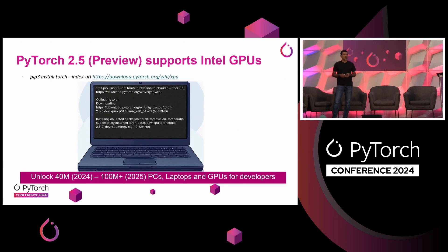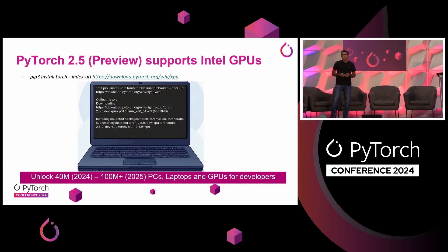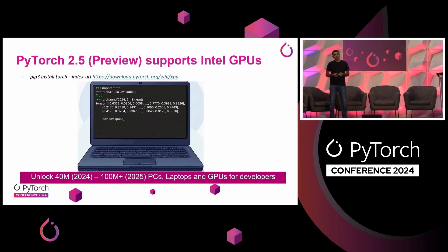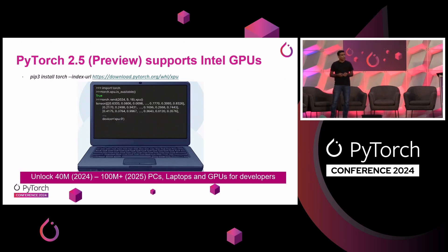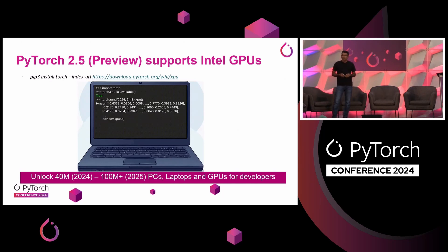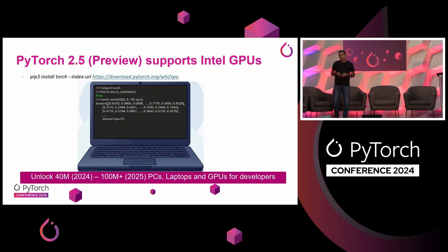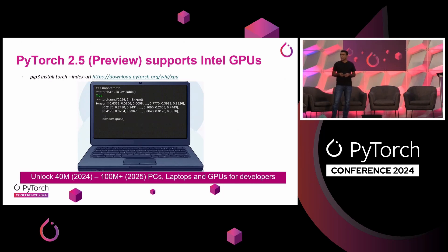We expect that number to go to around 100 million by end of next year. Considering most PCs and laptops ship with Windows OS, we did the initial work to support Windows in PyTorch to make it easier for all of you to use it. These updates will allow you to have a consistent programming experience across data center GPUs and client GPUs. If you can't wait to try your hands on it, you can download PyTorch 2.5 RC binaries and get your hands dirty.